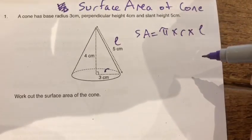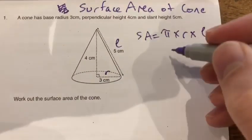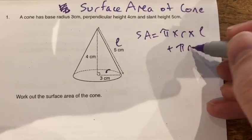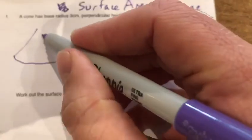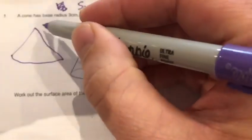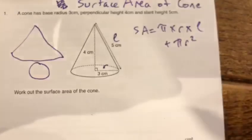And then you've also got to add the circle on the bottom of the cone, which is pi r squared. Pi r squared, so if we imagine flattening out that cone, and then of course there's the circle at the bottom.